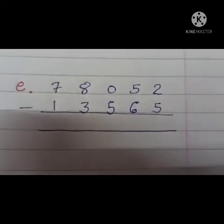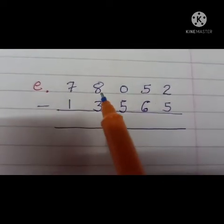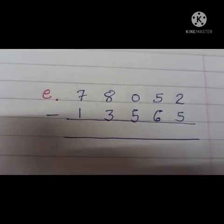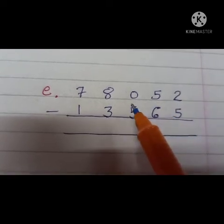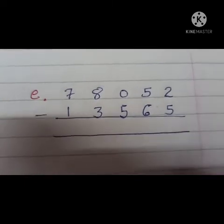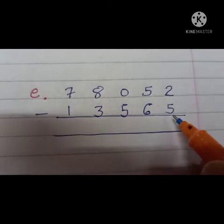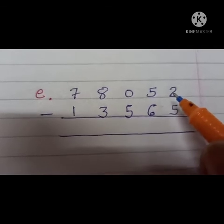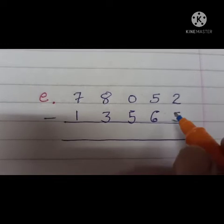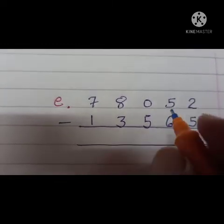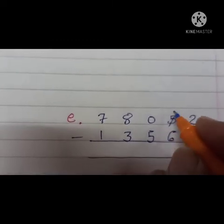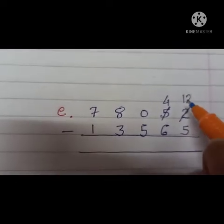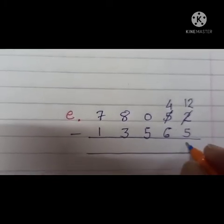Now next, E. Again, 5 digit numbers. 78,052 minus 13,565. 1's, 10's, 100's, 1000's and 10,000's. First we subtract 1's. 2 minus 5. Children, we cannot subtract 5 from 2 because 2 is a smaller number. So we will borrow from next number, 5, 10's. So 5 becomes 4 and 2 becomes 12. Now 12 minus 5 is equal to 7.